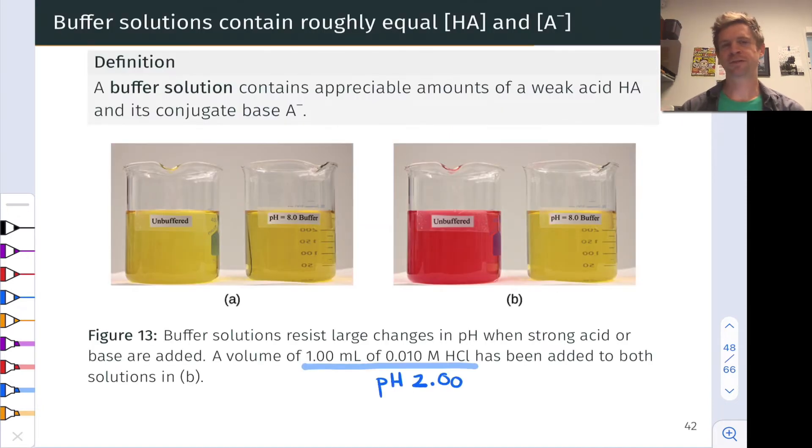A buffer solution is defined as a solution containing a weak acid HA and its conjugate base A-, which is also weak. This image shows the hallmark ability of buffers to resist large changes in pH where unbuffered solutions would undergo huge swings. On the left, we have an unbuffered solution at pH 8, and on the right, we have a pH 8 buffer system with appreciable amounts of both the acid and the conjugate base.